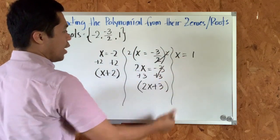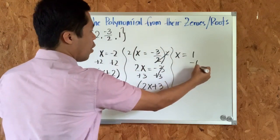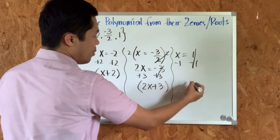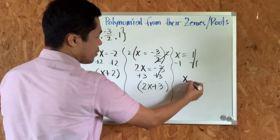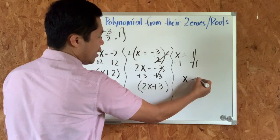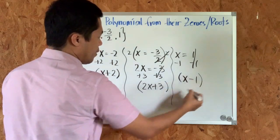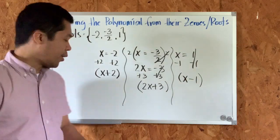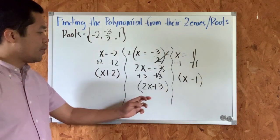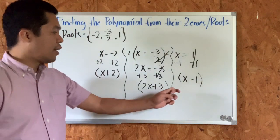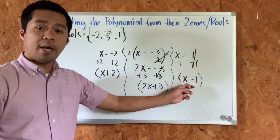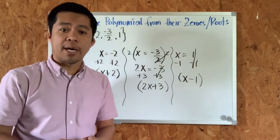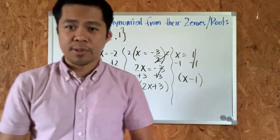For x equals one, we subtract one on both sides so that equals zero, giving us x minus one. So now we have these three binomials: x plus two, 2x plus three, and x minus one. The next step will be to multiply those three binomials.